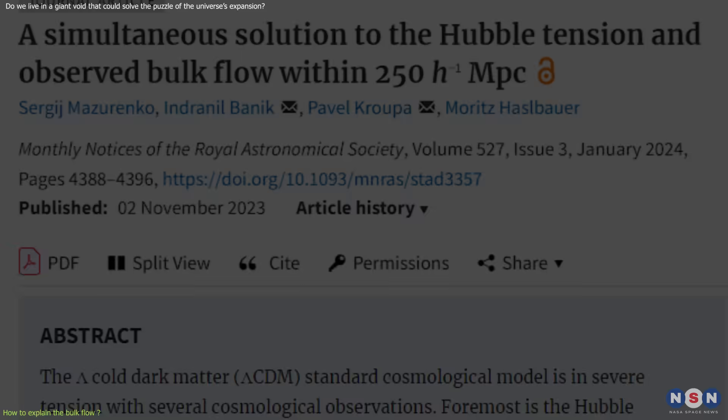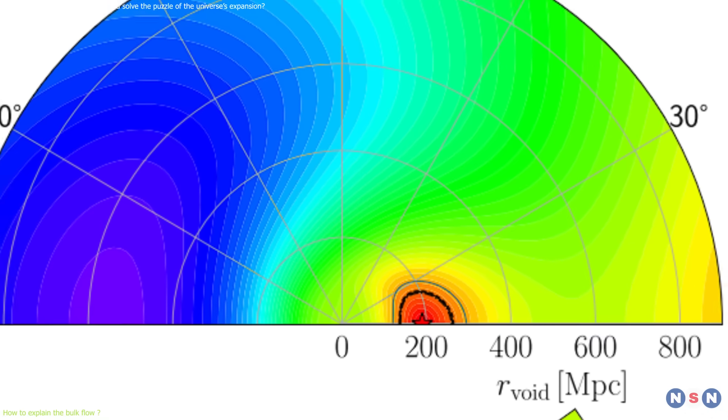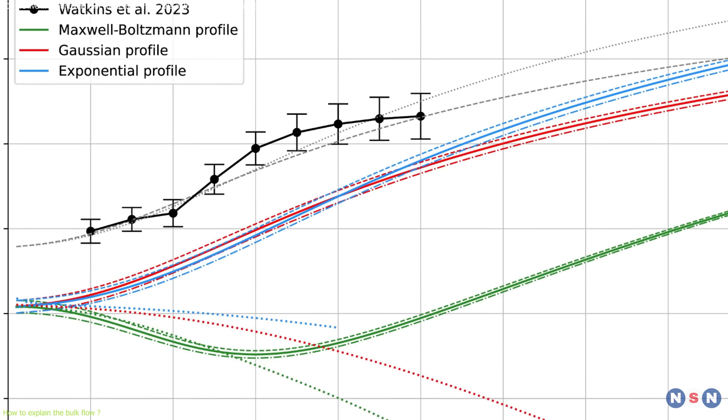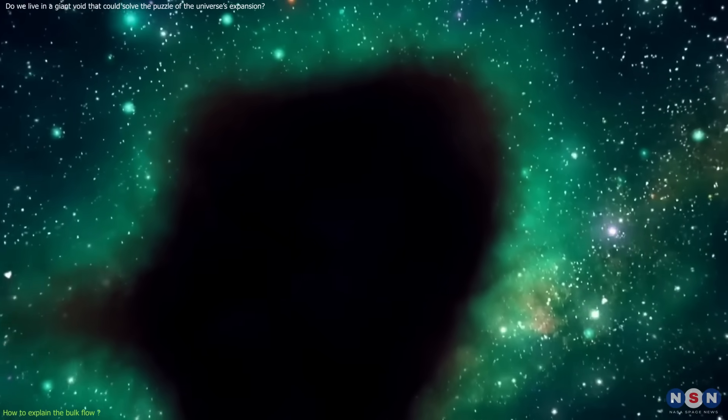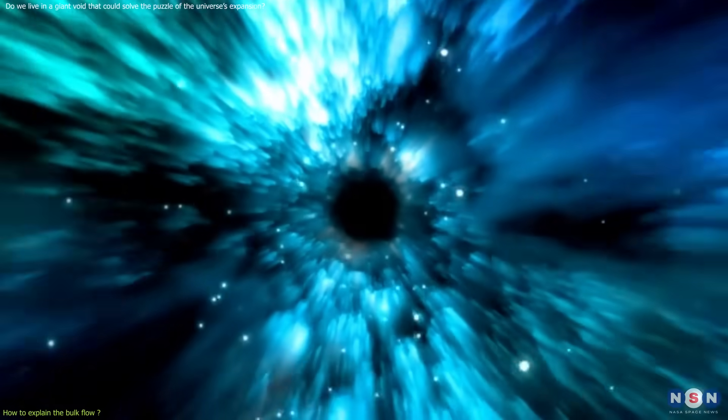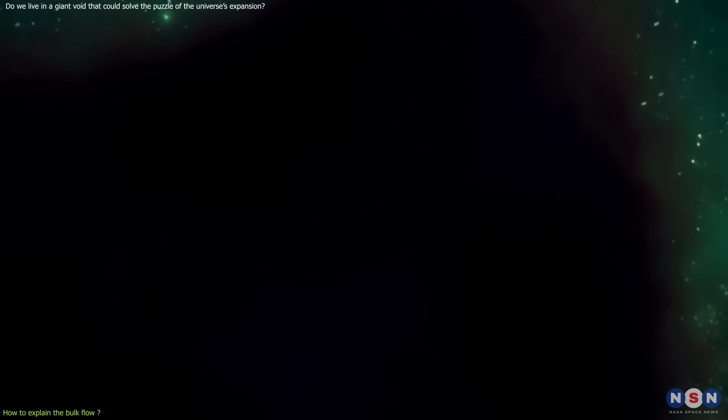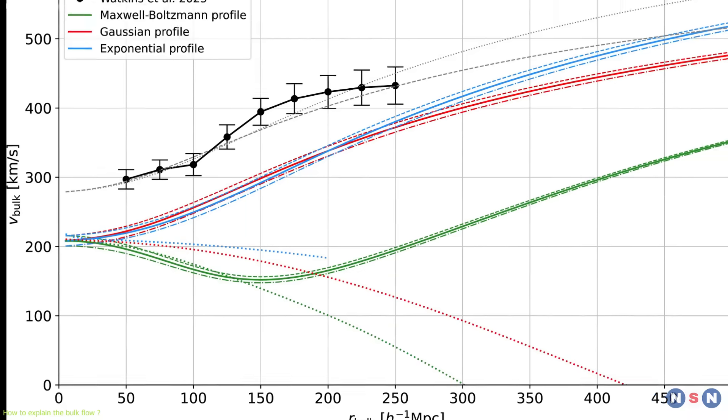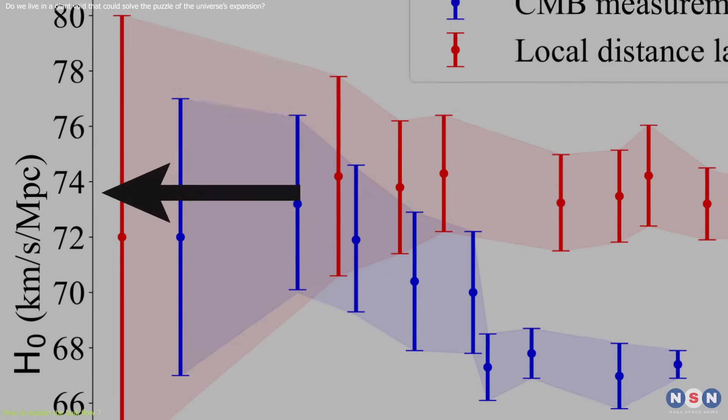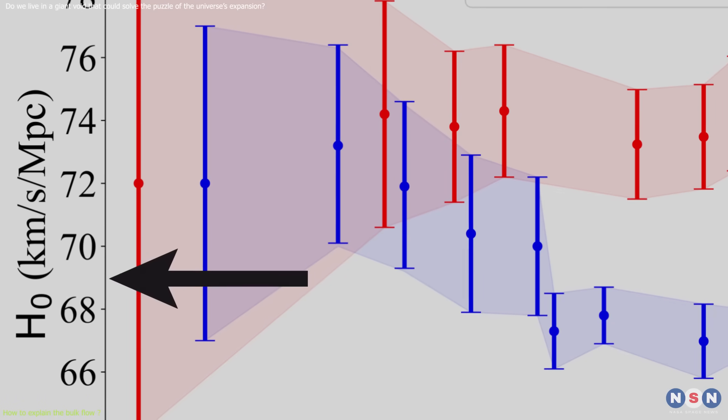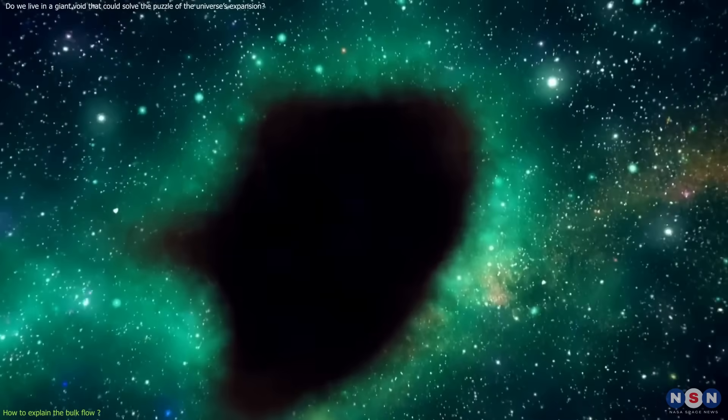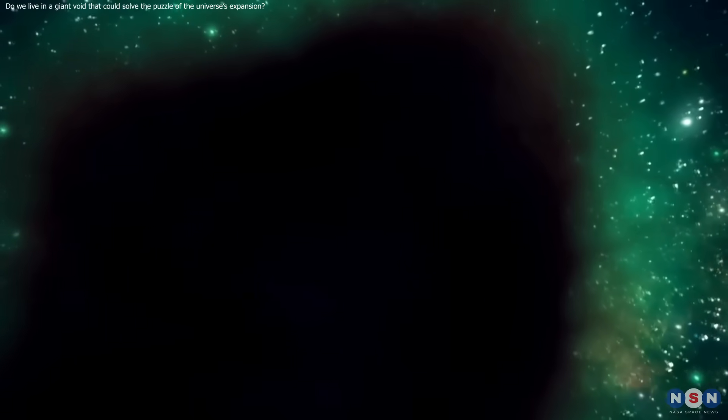The authors of the paper used a simple model to estimate the properties and location of the local void, and how it affects the Hubble constant and the bulk flow. Surprisingly, they found that the local void is centered at a distance of about 70 megaparsec from us, and that it has a density contrast of about negative 0.2, which means that it is 20% less dense than the average. They also found that the local void can explain the observed magnitude and direction of the bulk flow, and that it can reduce the Hubble tension by about 70%. This means that the local void is a plausible and consistent solution to the Hubble tension, and that it reveals the existence and influence of a large-scale structure in the nearby universe.